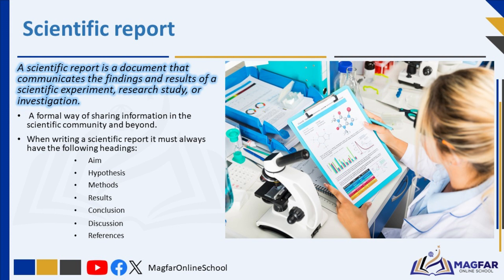Scientific reports follow a structured format to ensure clarity, accuracy, and consistency. When writing a scientific report, it must always have the following headings: Aim, Hypothesis, Methods, Results, Conclusion, Discussion, and References. We will discuss each heading separately.